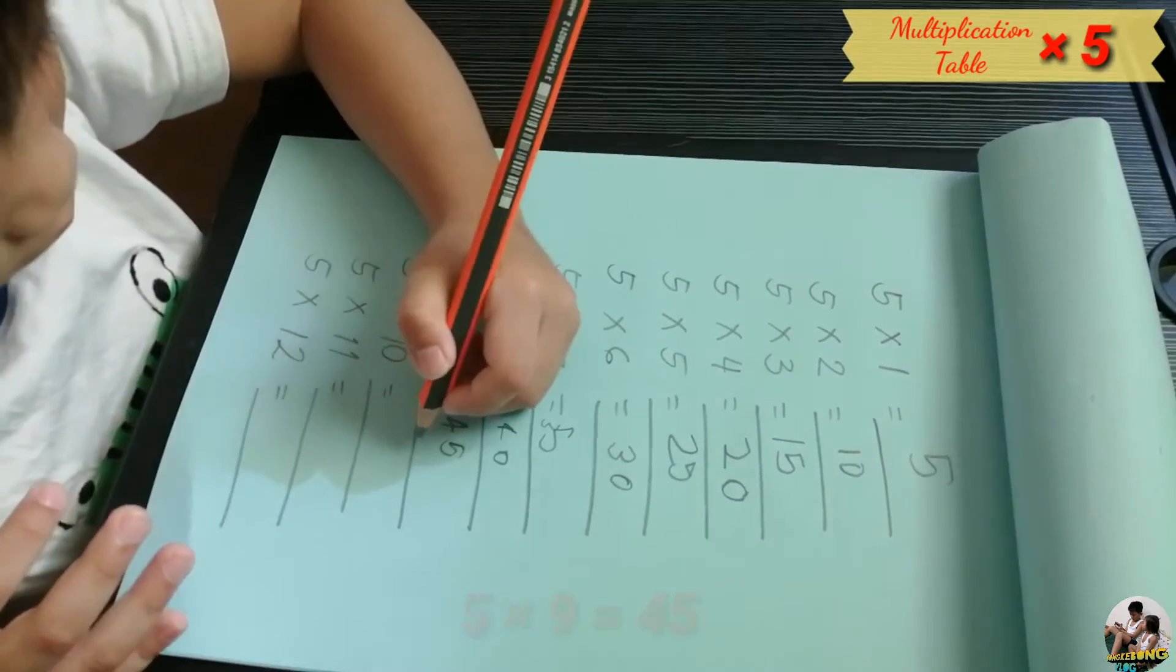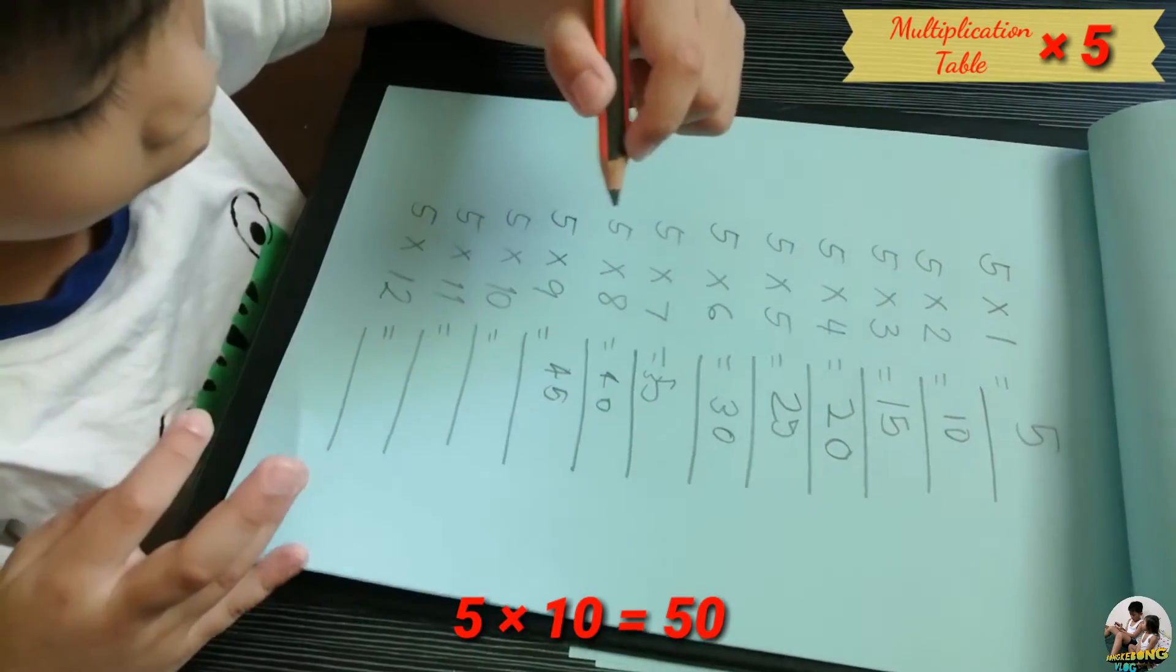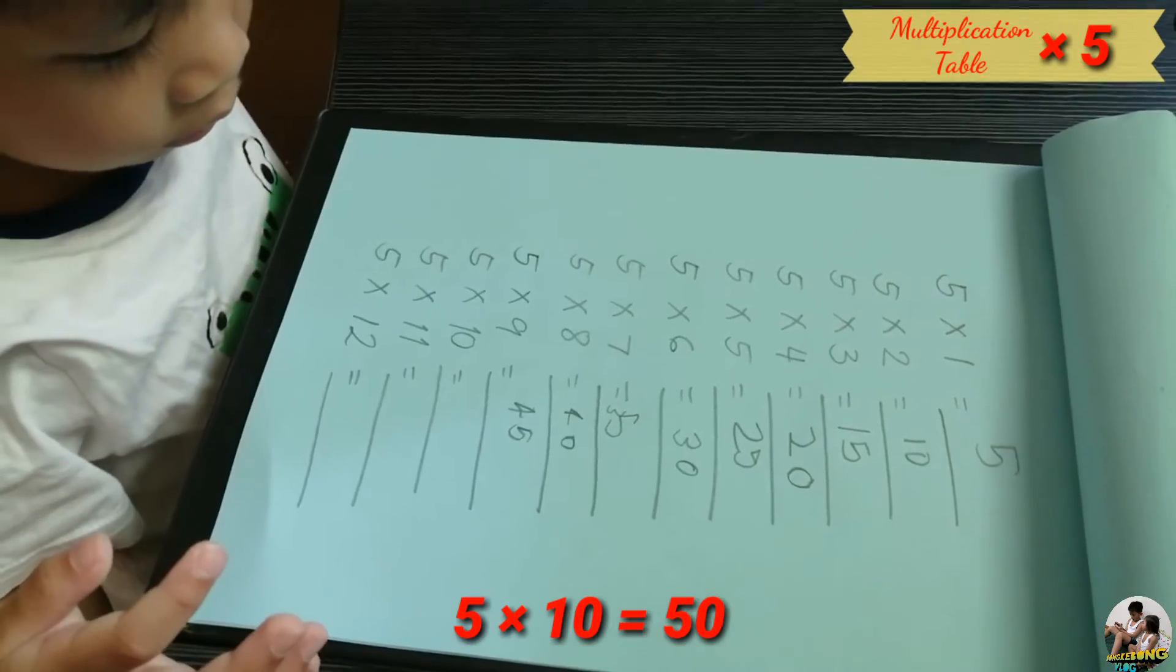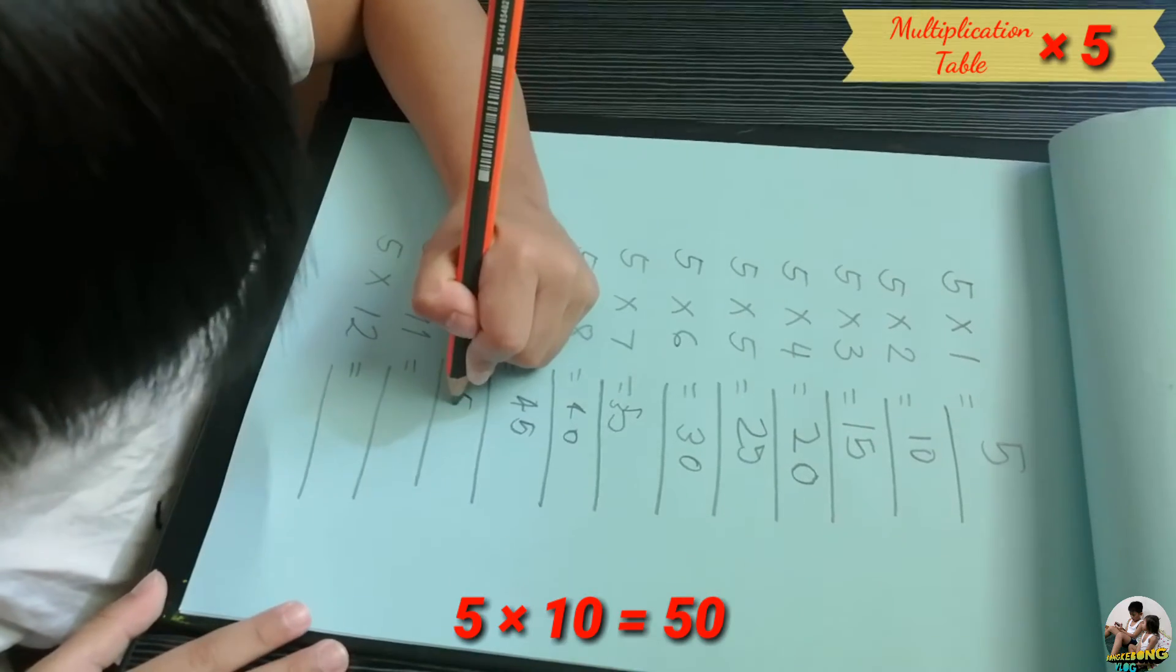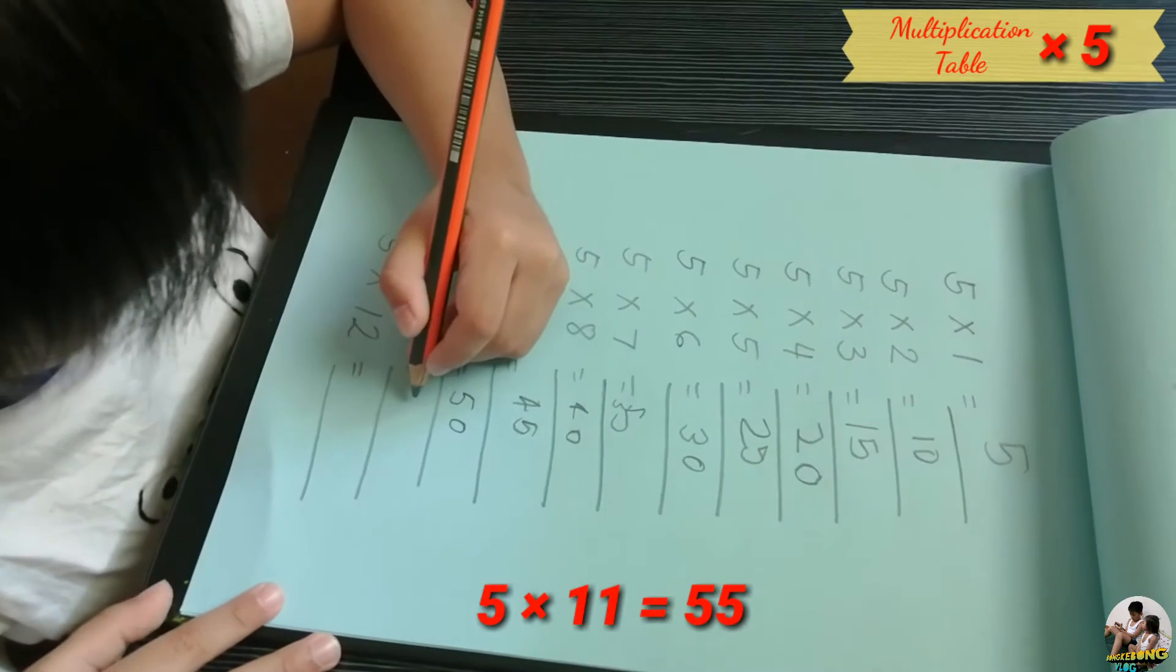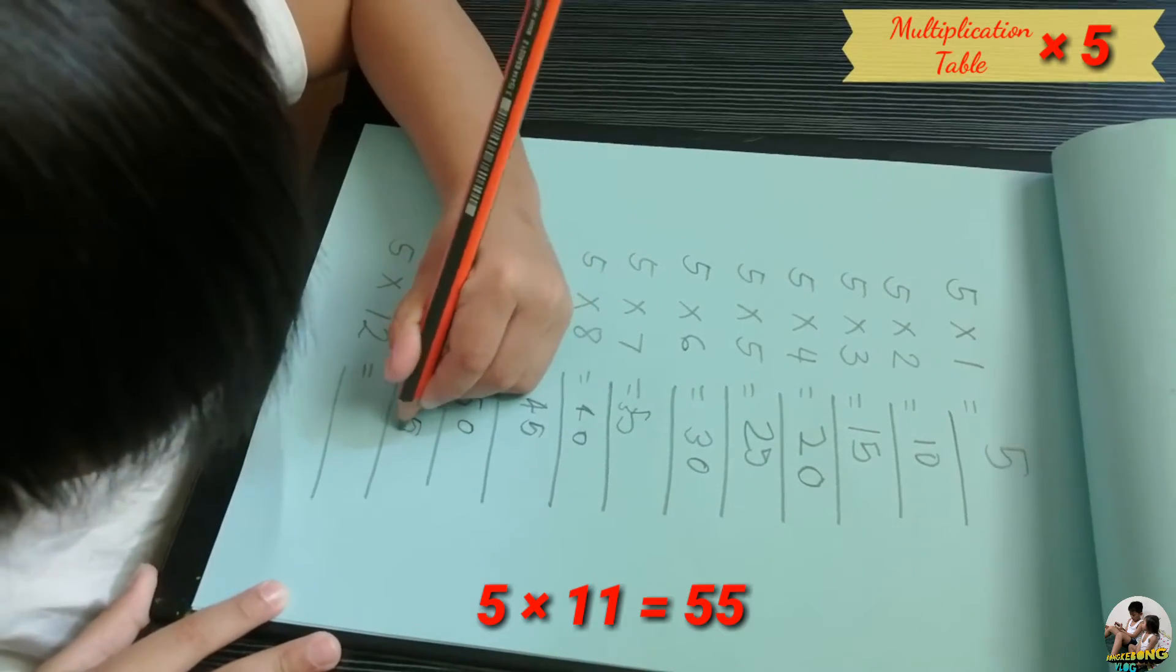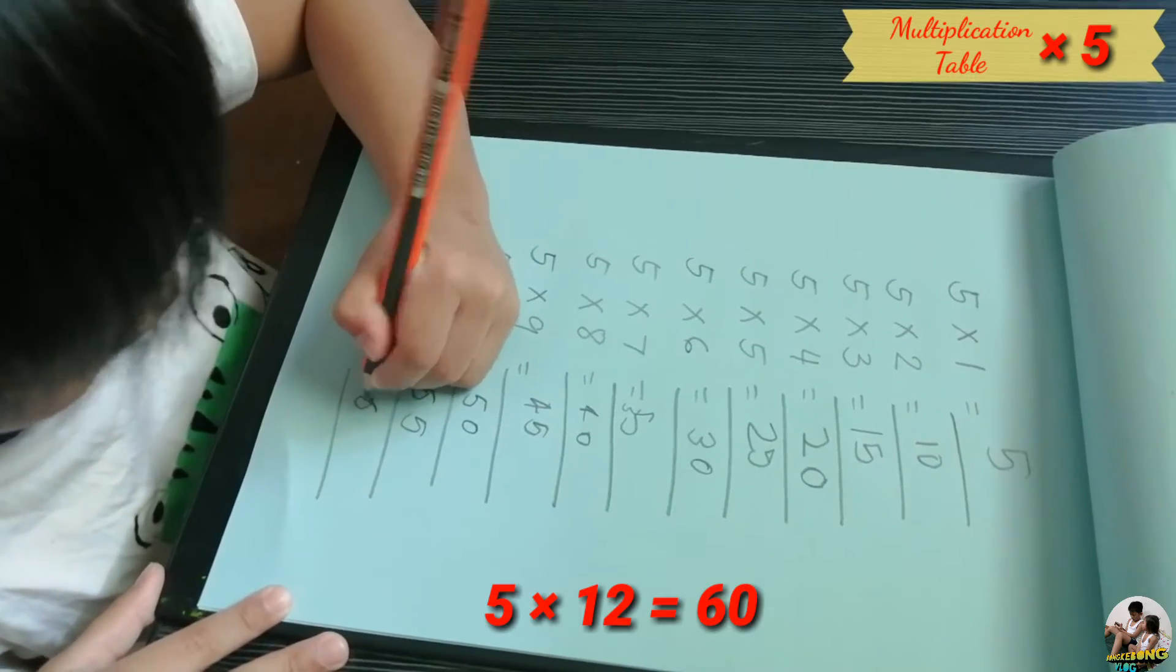Five times ten equals... What's the answer? Five times ten equals fifty. Very good. How about five times eleven? Five times eleven equals fifty-five. Five times twelve equals sixty.